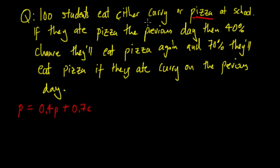Conversely when we look at curry, curry has to equal 0.6p plus 0.3c. You see that these two have to add up to one, because all of the people who eat pizza have to do something, they have to either eat pizza or curry. We're assuming that everyone who eats pizza one day or curry one day has to then do one of the outcomes the next day. So we have these two equations.